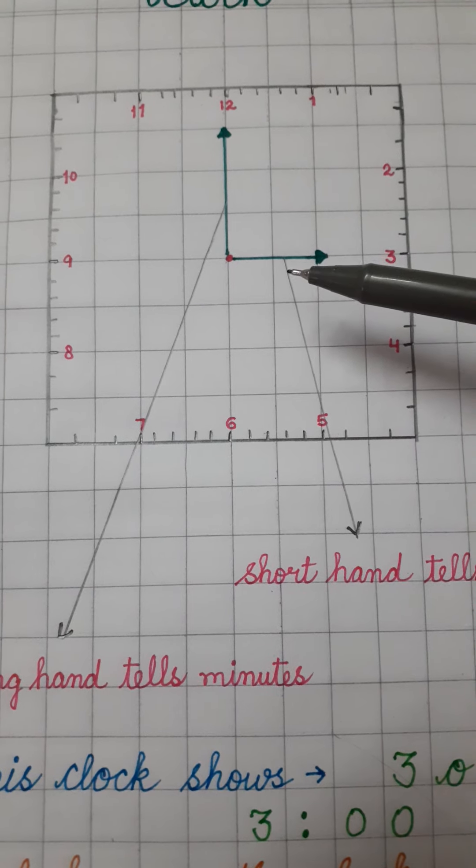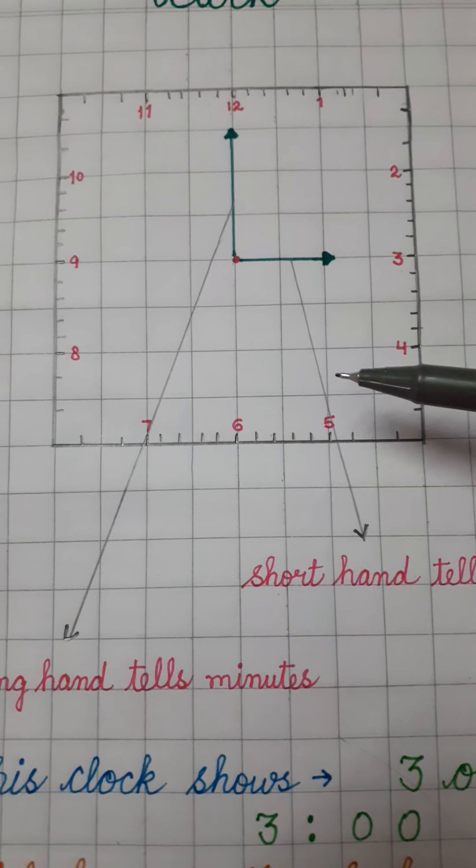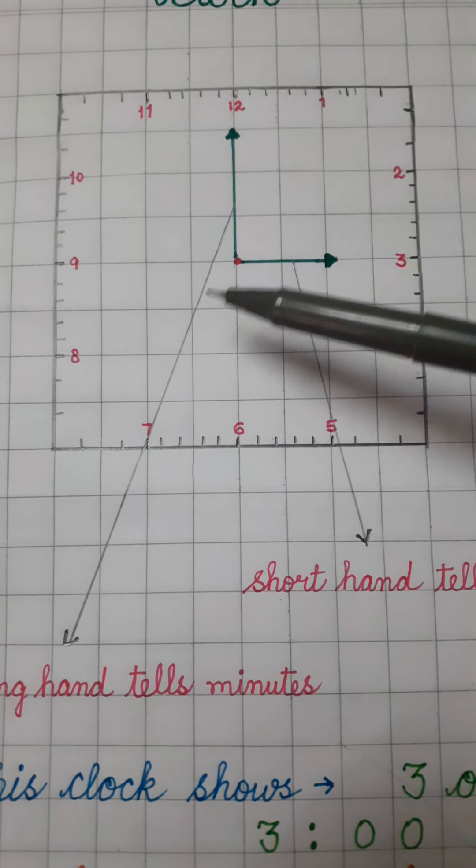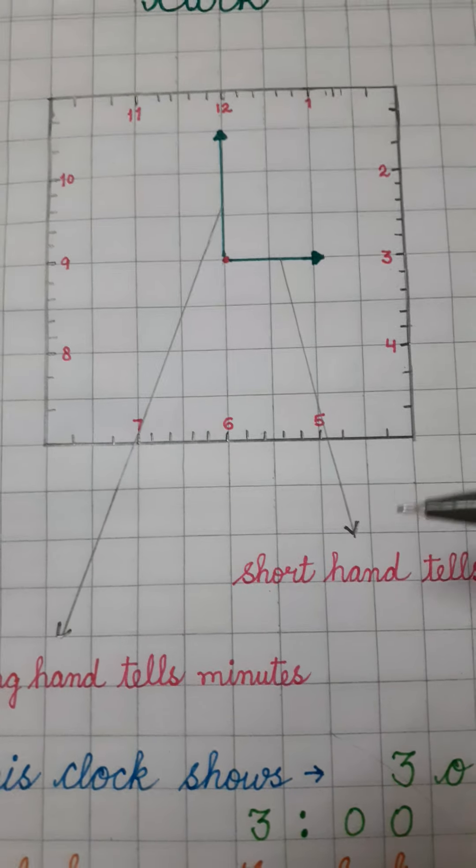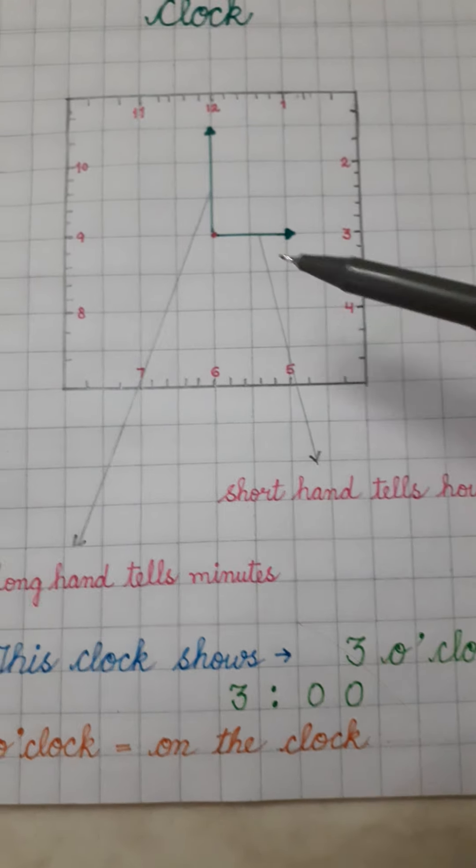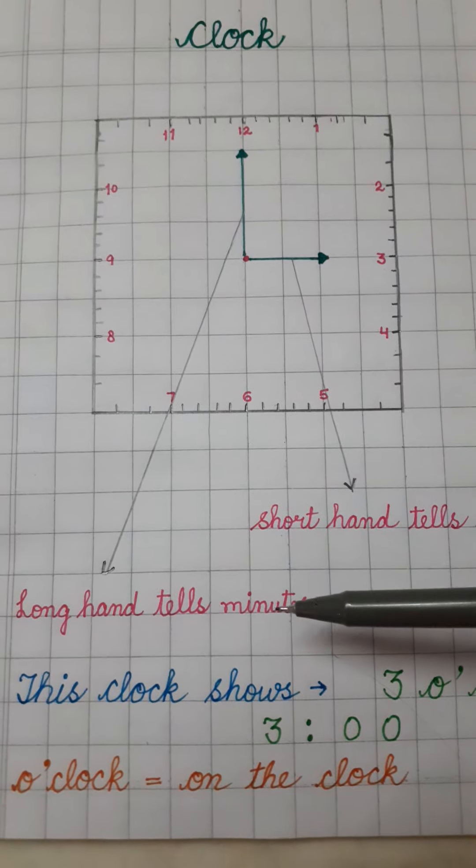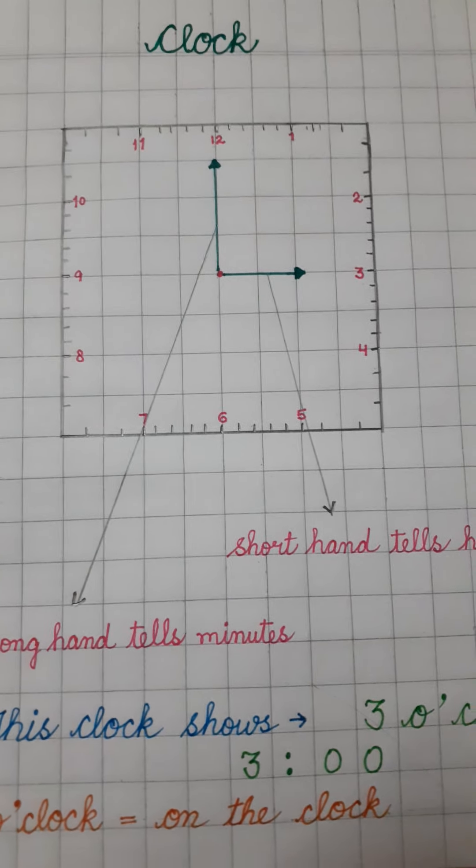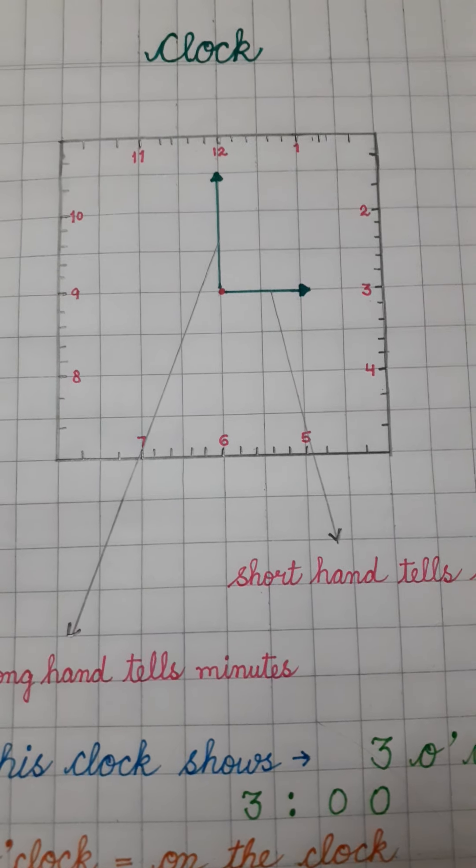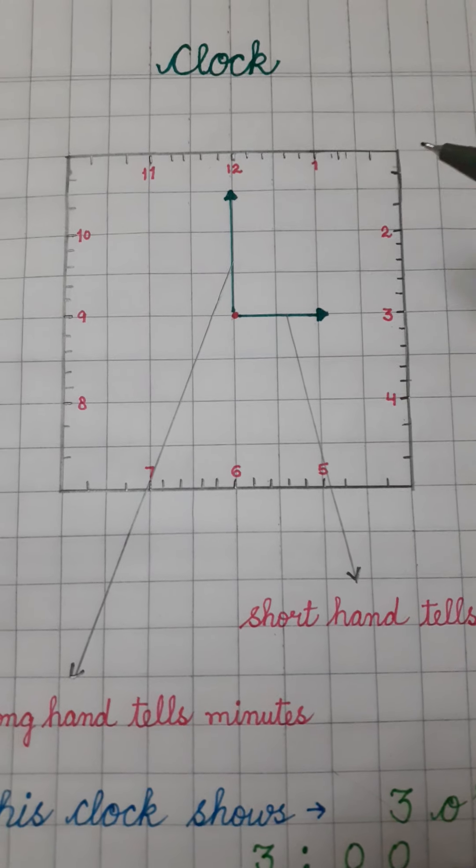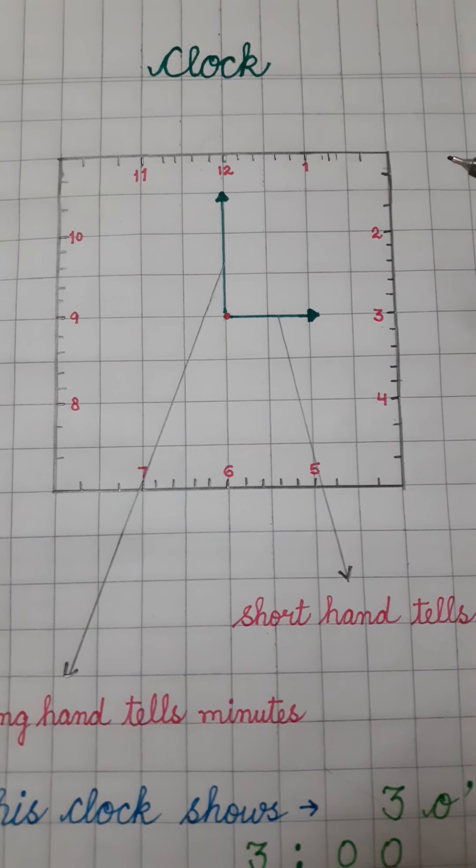And there are two hands. A small hand, short hand and a long hand. Short hand tells us hour. Long hand tells us minutes.